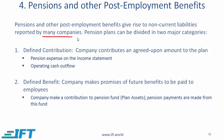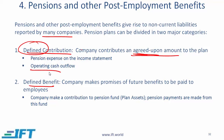With pensions, there are two broad categories: a defined contribution plan or a defined benefit plan. In a defined contribution plan, the company contributes an agreed-upon amount to the plan each period, and that amount is shown as an expense. On the cash flow side, it is shown as an operating outflow because this is essentially compensation, just like salary.